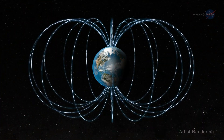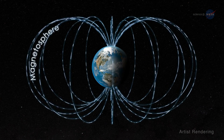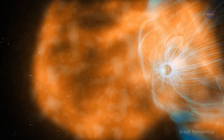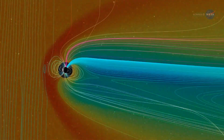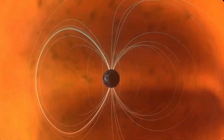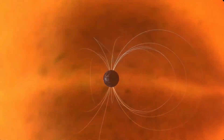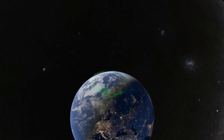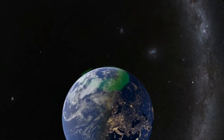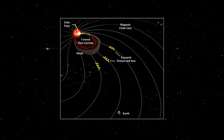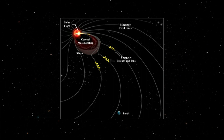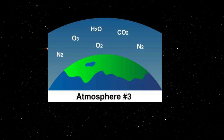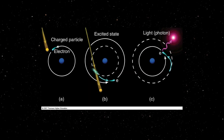Now the magnetic field is deflecting the solar wind. The solar wind is deflected around Earth's magnetic field. The electric electrons become neutral in this process.